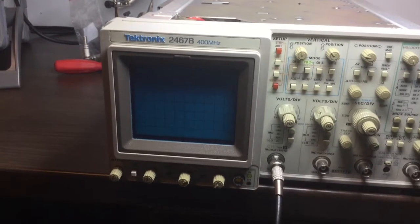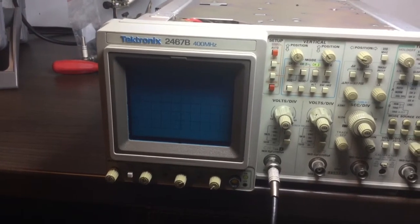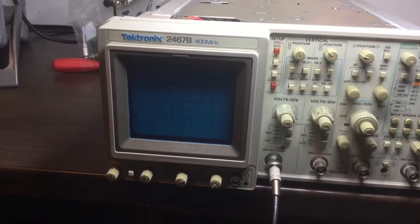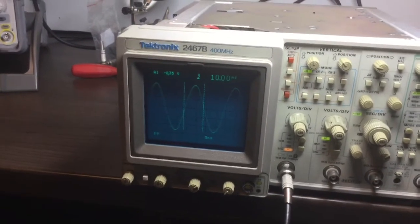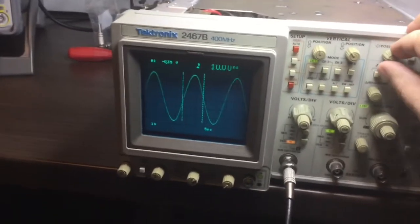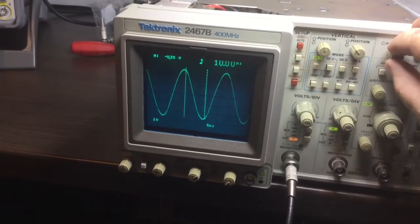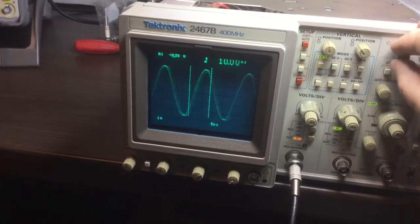I want to show that when the scope is cold, freshly started, it does not exhibit any issues whatsoever in displaying the wave correctly. Even if I move, position the wave to the left or to the right.